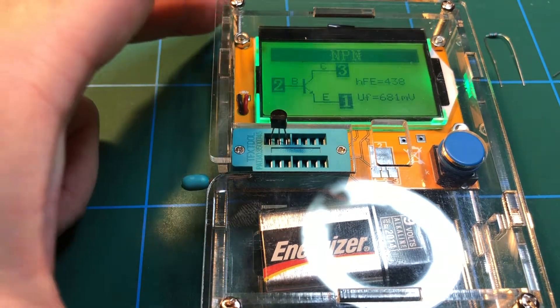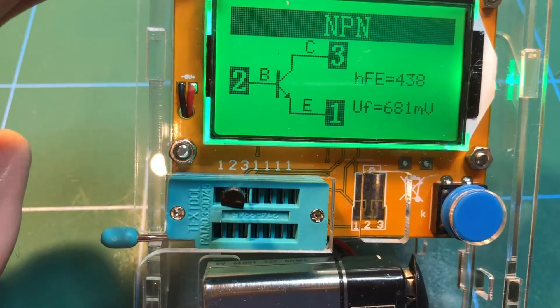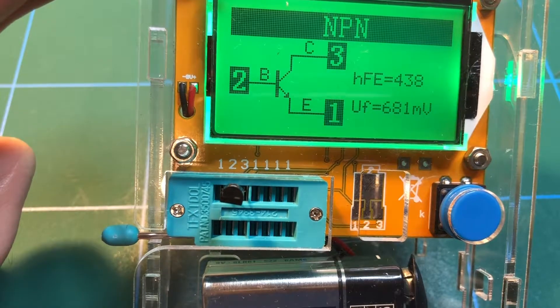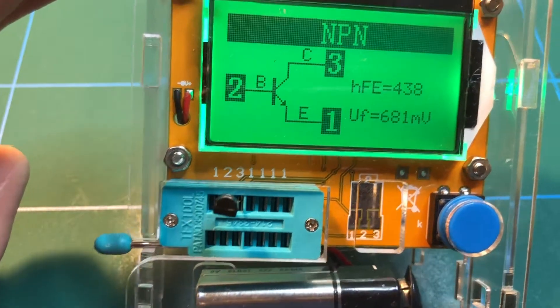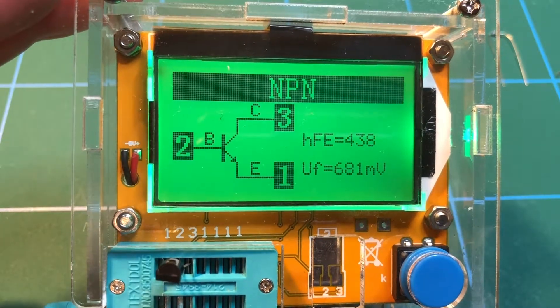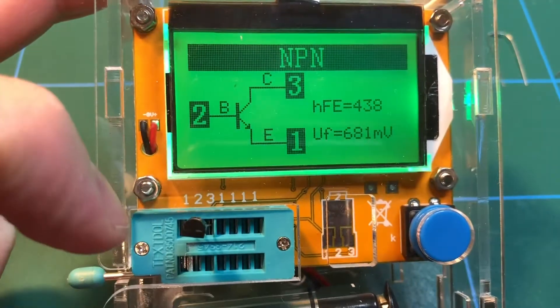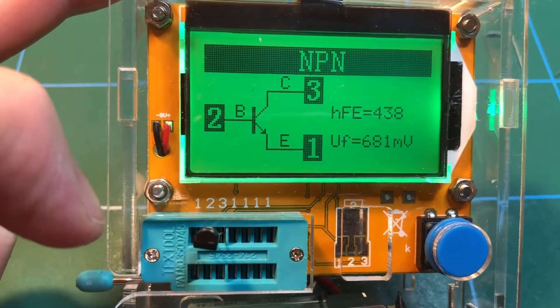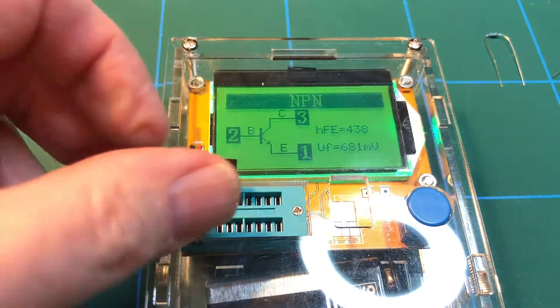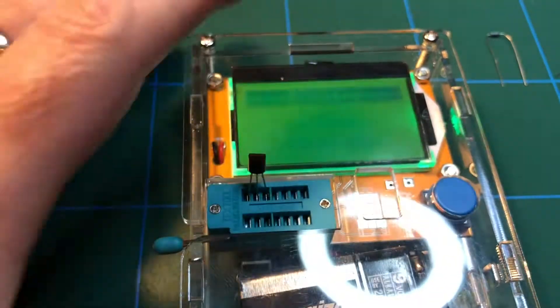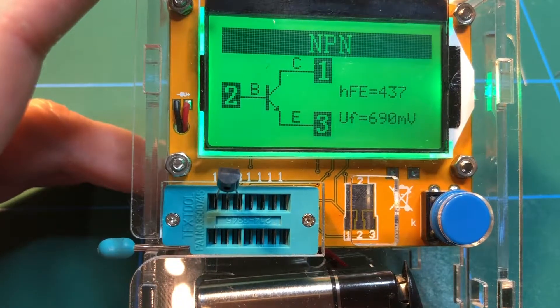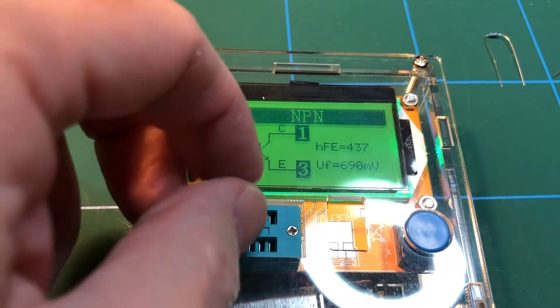There you go. Transistor. NPN transistor. 681 millivolts. HFE, I don't know what that means. But you've got the base, collector, emitter. And so the base is in number 2. The collector is in position number 3. And the emitter is in position number 1. And I guess if we twisted it round the other way, then the reverse would be true. Yep. So there we go. Yeah. That works fine. Absolutely fine.